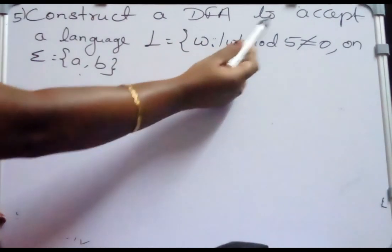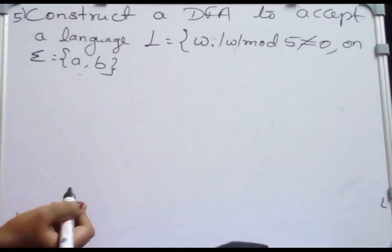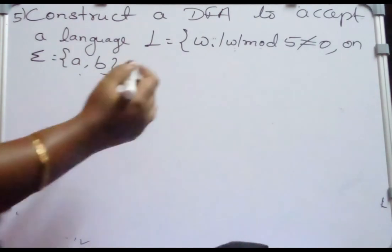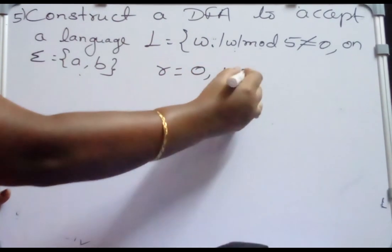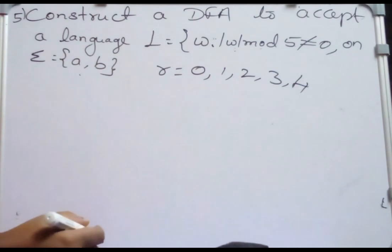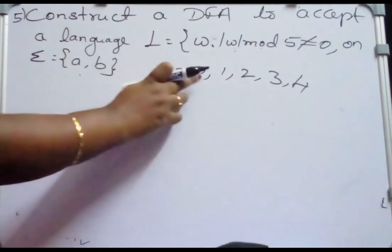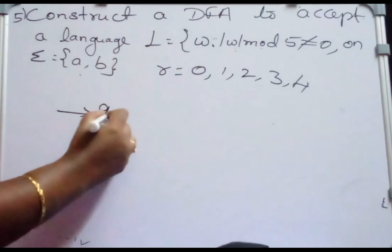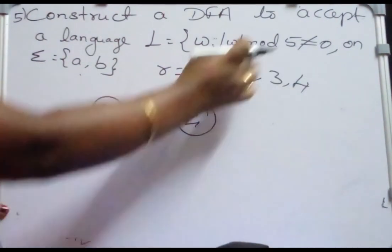Construct a DFA to accept a language L equal to W, where W mod 5 is not equal to 0. Same as the previous problem, but now the length of the string mod 5 should not equal 0. The possible remainders of 5 are 0, 1, 2, 3, and 4 — giving us 5 states. We construct the DFA like a cycle from Q0 to Q4. From Q0 on reading A or B, it goes to Q1.